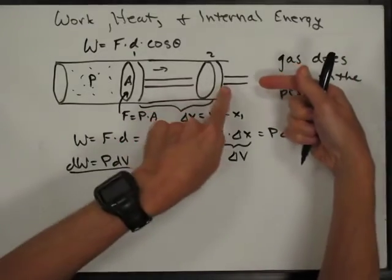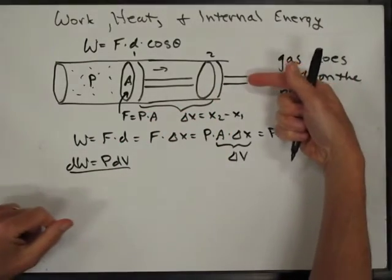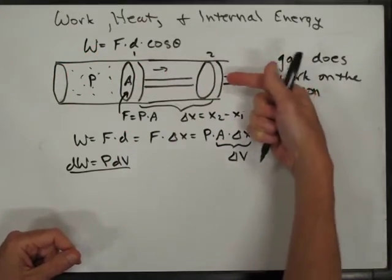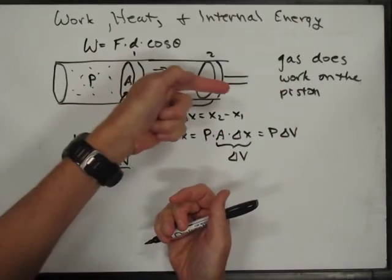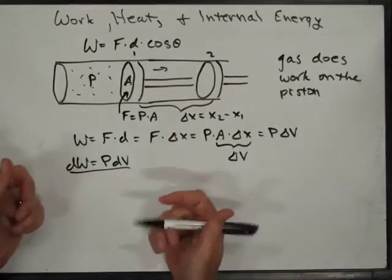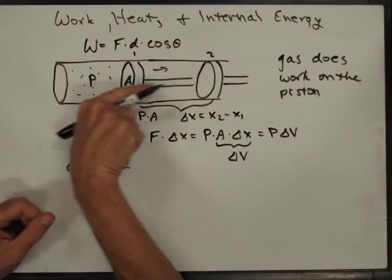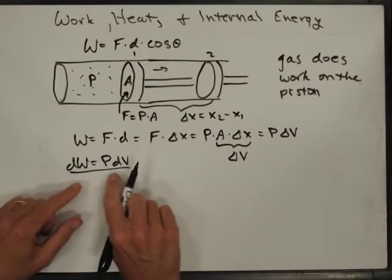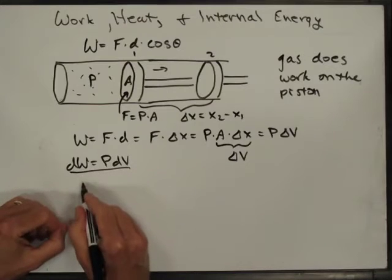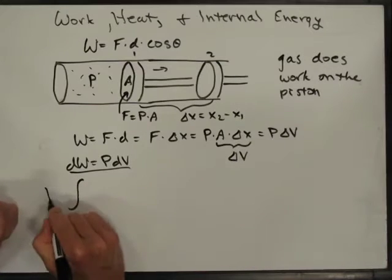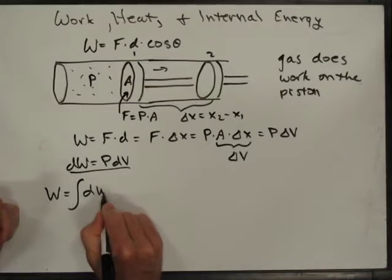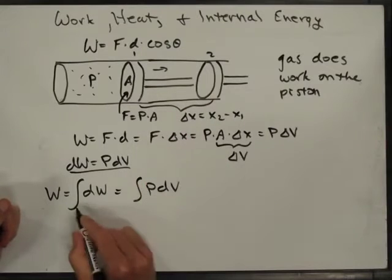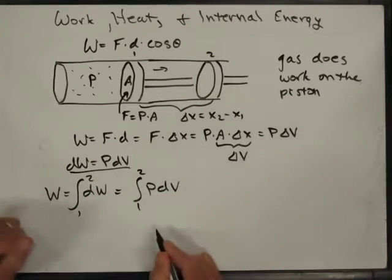Now, if the piston started in the other position, then the gas is having work done on it, because the gas is pushing one way but the piston is going the other way. We would say work is being done on the gas, or equivalently, negative work is being done by the gas. If I want to integrate this, the work done is equal to the integral of dW, which equals the integral from 1 to 2 of P dV.